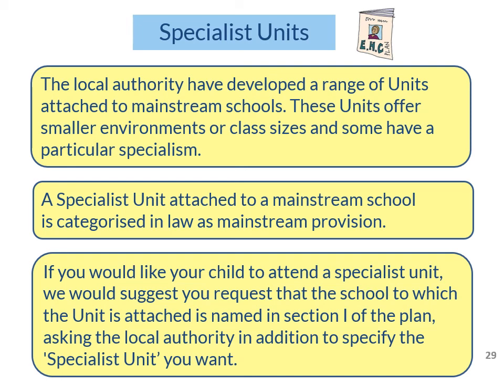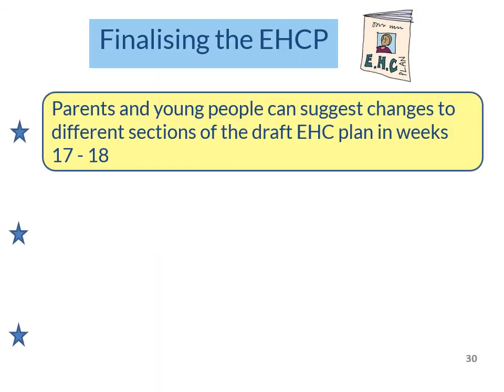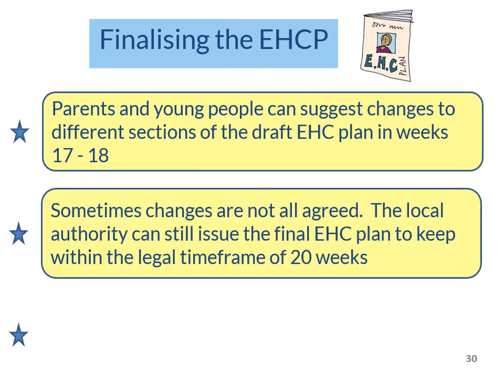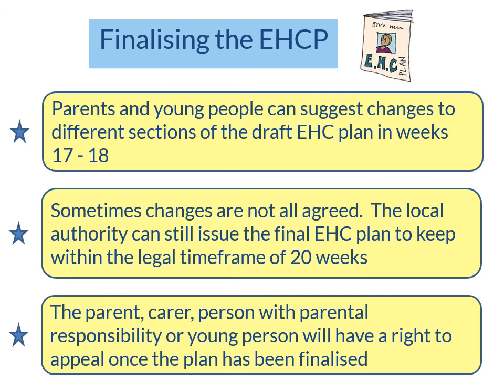So just to be clear: parents and young people can suggest changes to different sections of the draft EHC plan in weeks 17 to 18. However, sometimes changes are not all agreed. The local authority can still issue the final EHC plan to keep within the legal timeframe of 20 weeks. The parent, carer, person with parental responsibility or the young person will have a right to appeal once the plan has been finalised.